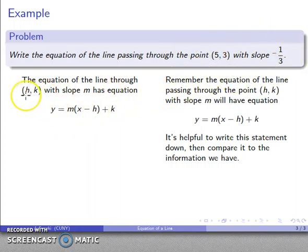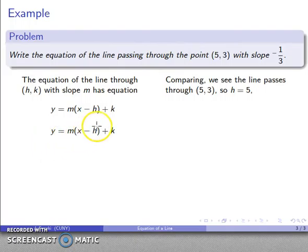So let's see. The point is h, k. Here's the actual point. So that says that h is the same as 5. So I'll go ahead and start substituting those in. h is 5, that's my x coordinate of the point. So I'll substitute that in.